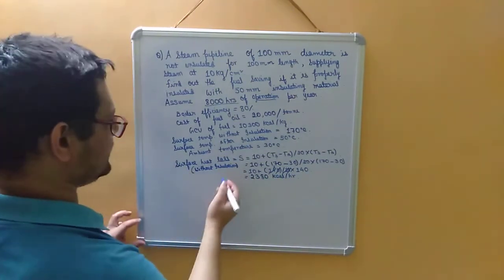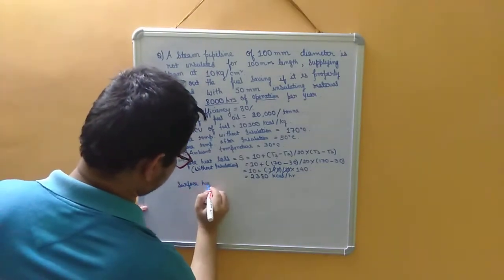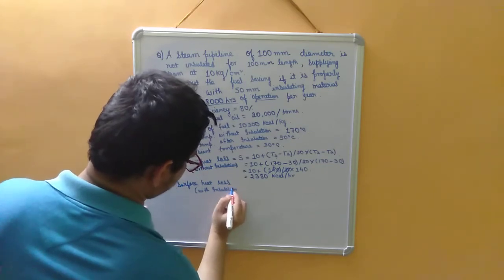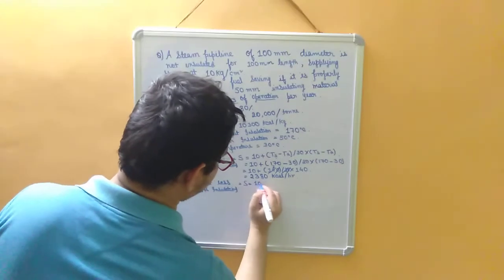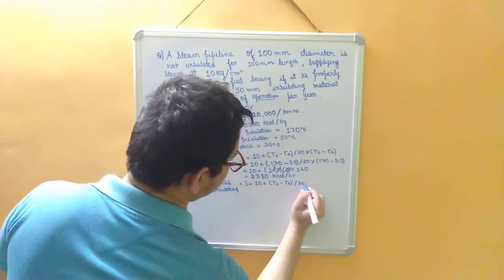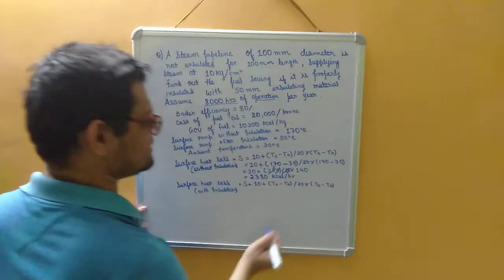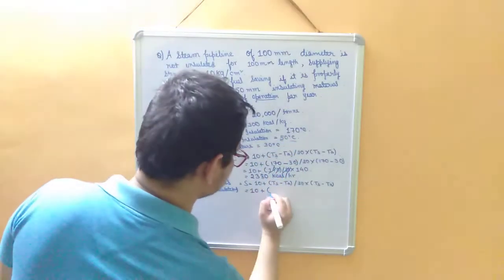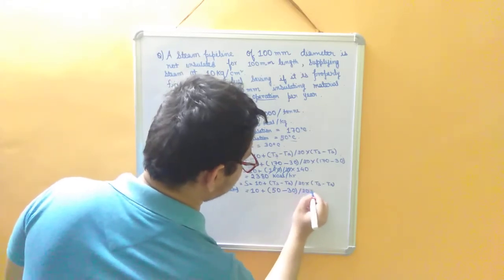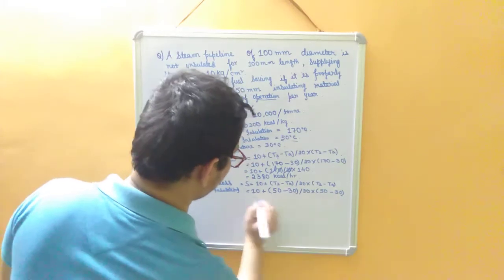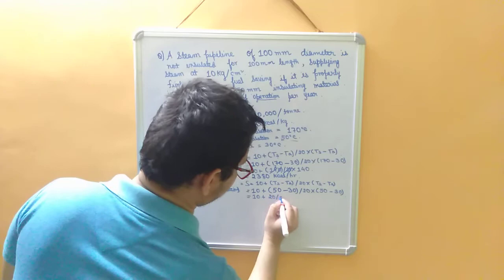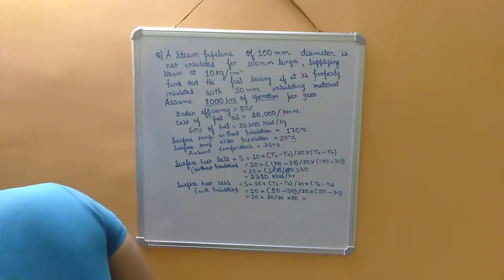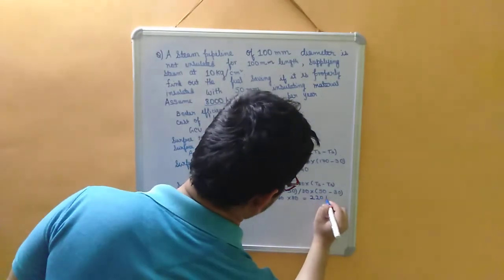Now we calculate the surface heat loss with insulation. The formula remains the same: S = (10 + (T_S - T_A) / 20) × (T_S - T_A). With insulation, T_S = 50°C and T_A = 30°C, so: S = (10 + 20/20) × 20 = (10 + 1) × 20 = 220 kilocalories per hour.